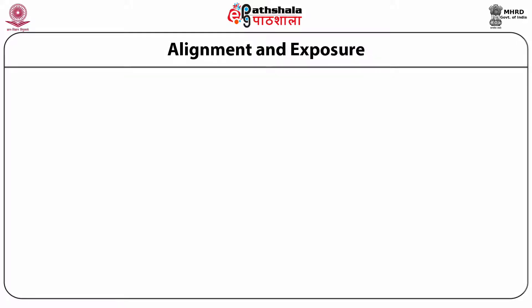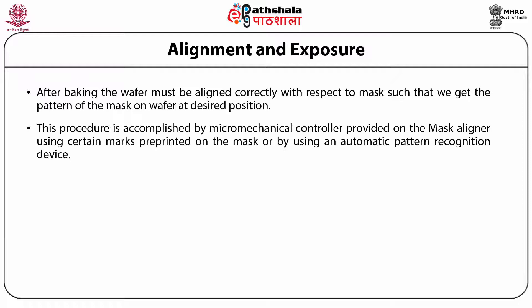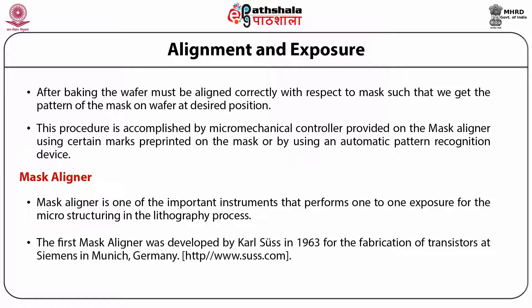Alignment and exposure: after baking the wafer, the wafer must be aligned correctly with respect to the mask such that we get the pattern of the mask on the wafer at the desired position. This is accomplished by a micromechanical controller provided on the mask aligner using certain marks pre-printed on the mask or by using an automatic pattern recognition device. The mask aligner is one of the important instruments that performs one-to-one exposure for microstructuring in the lithography process. The first mask aligner was developed by Carl Seuss in 1963 for the fabrication of transistors at Siemens in Munich, Germany.